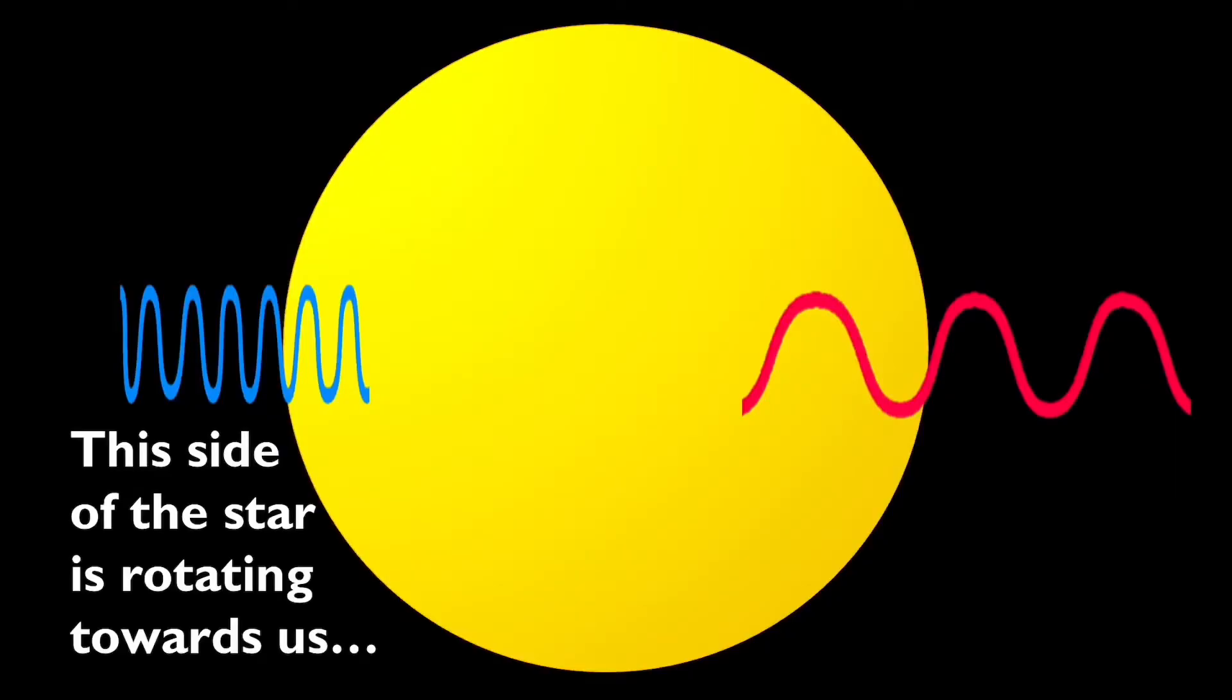On one hand, we see red-shifted light coming from this edge of the star, while on the other side we see blue-shifted light. Now, this doesn't mean that the light itself is actually red or blue, just that it's slightly longer and slightly shorter than what we would have expected. This phenomenon tells us that this side of the star is rotating towards us, while this side rotates away.